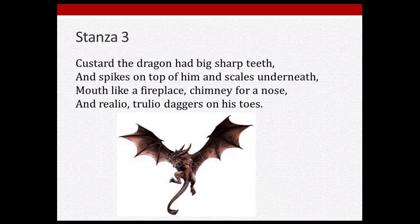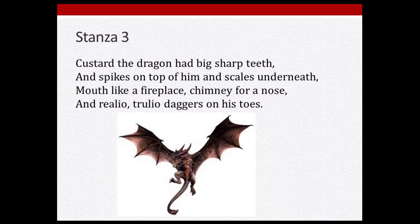In the next stanza, Custard's appearance is described: 'Custard the dragon had big sharp teeth and spikes on top of him and scales underneath. Mouth like a fireplace, chimney for a nose, and realio trulio daggers on his toes.' Custard has big sharp teeth, spikes on top of his body, and scales on his lower surface. His mouth is like a fireplace, his nose is like a chimney, and his toenails are like daggers.